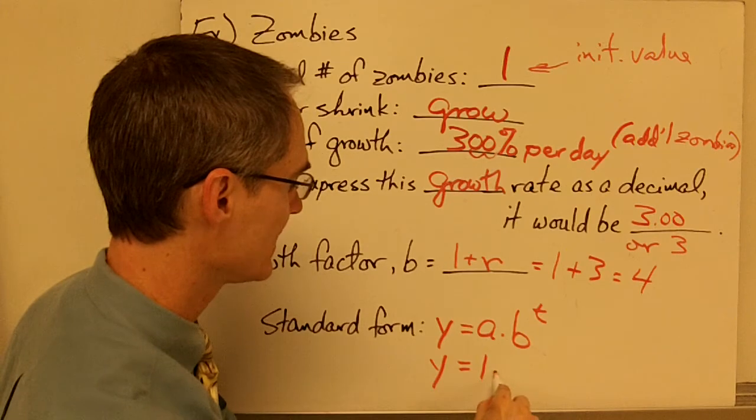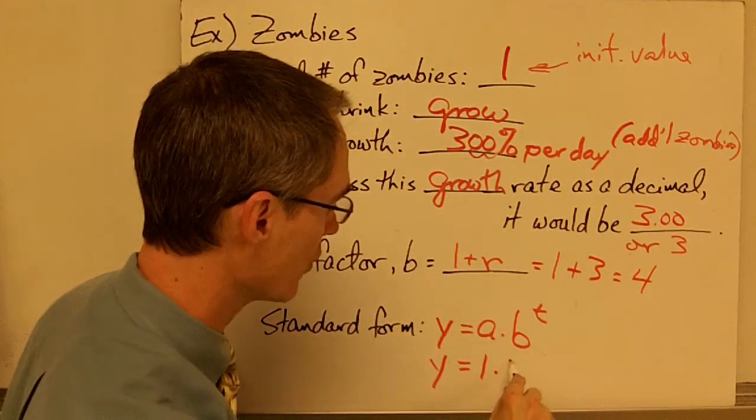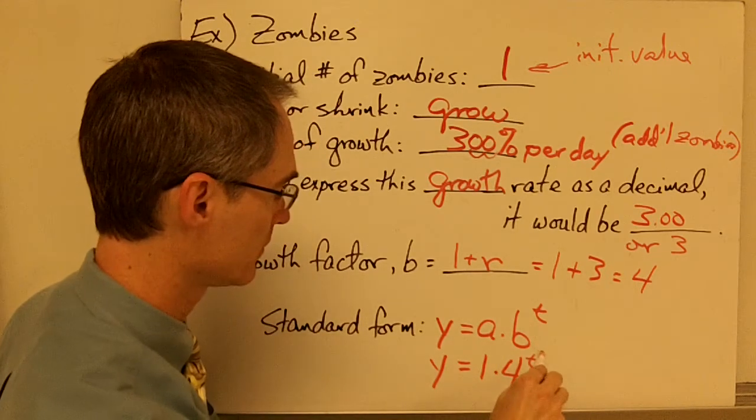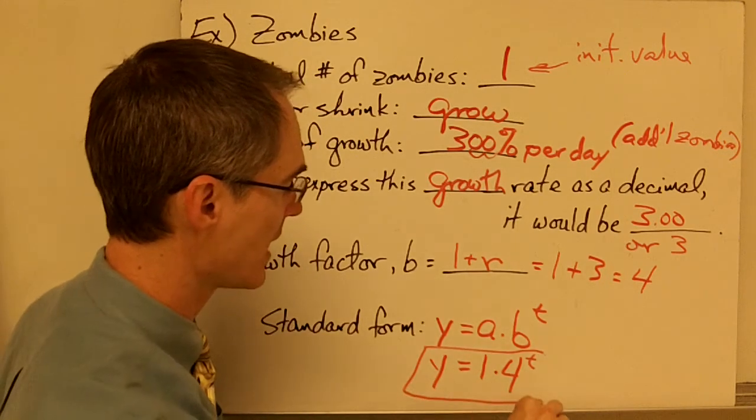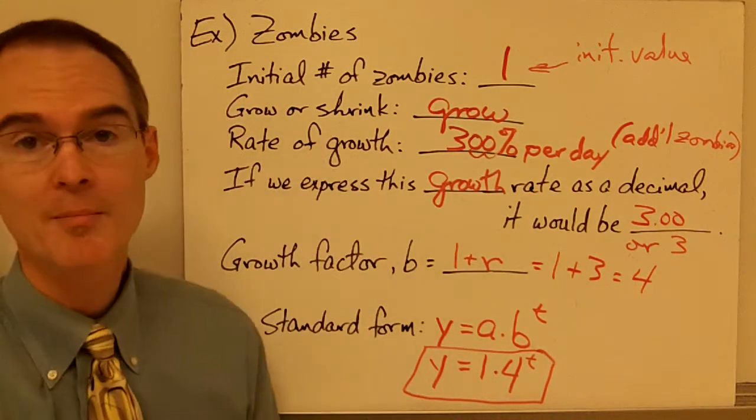So Y equals 1 times B, my growth factor, where my growth factor is 4, to the power of T. And there's my standard form of an exponential function for my zombie situation.